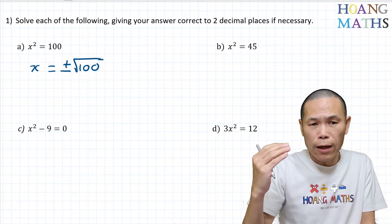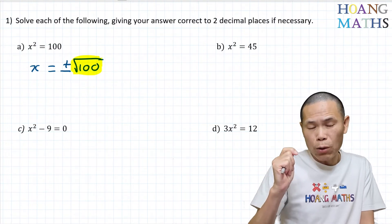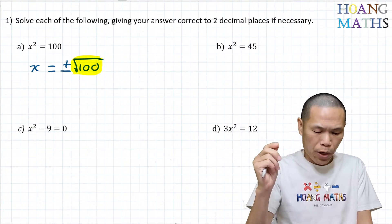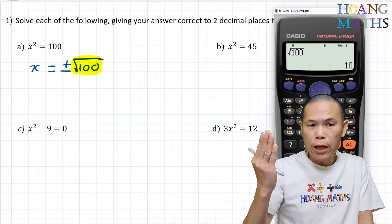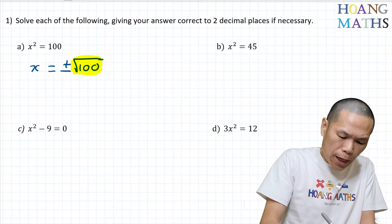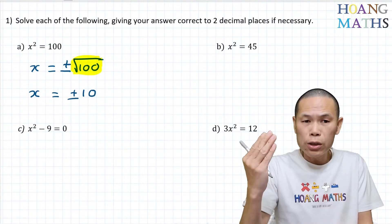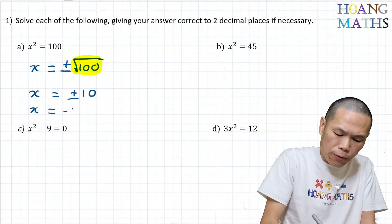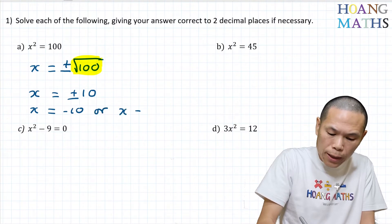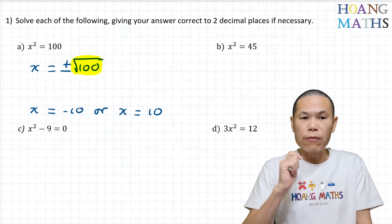We can just put square root of 100 on a calculator. If you know your square numbers, that would be fantastic; otherwise just use the calculator. So square root of 100 gives me 10. Therefore, x is equal to positive 10 or negative 10 — or written as x equals negative 10 or x equals 10. Either way is fine.